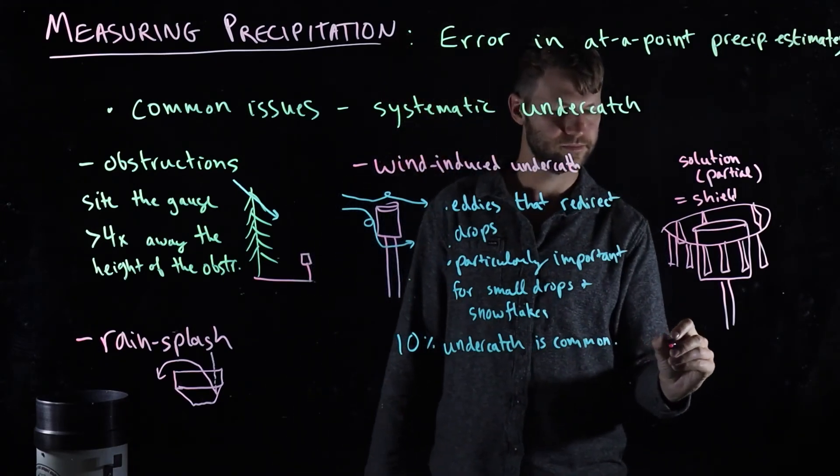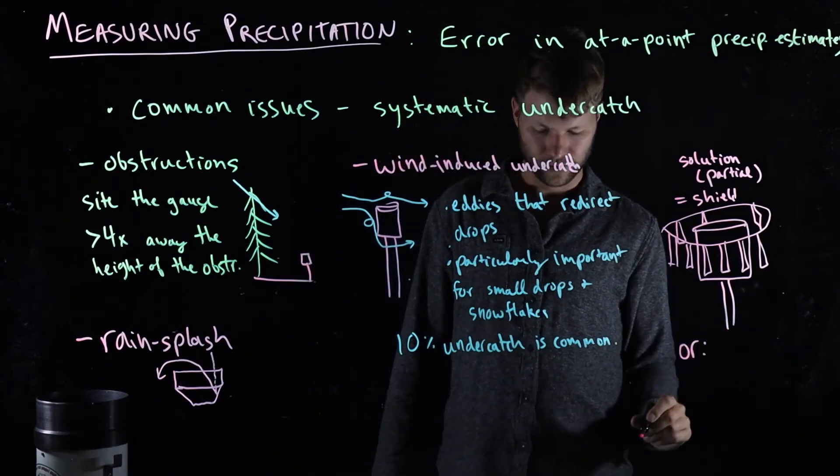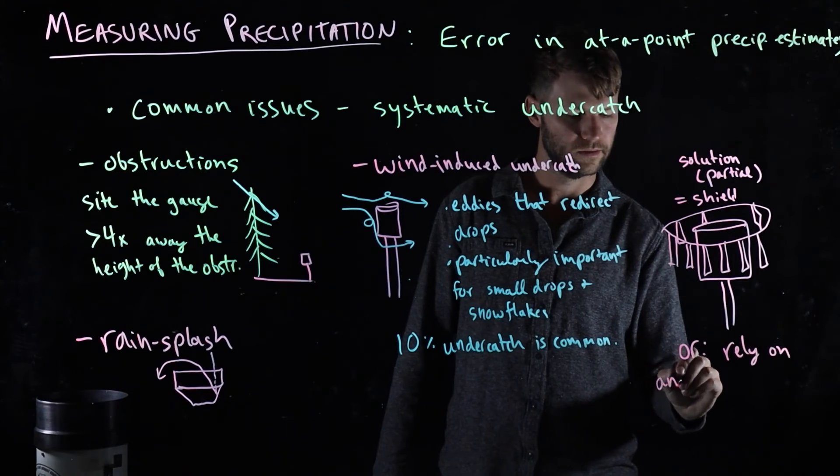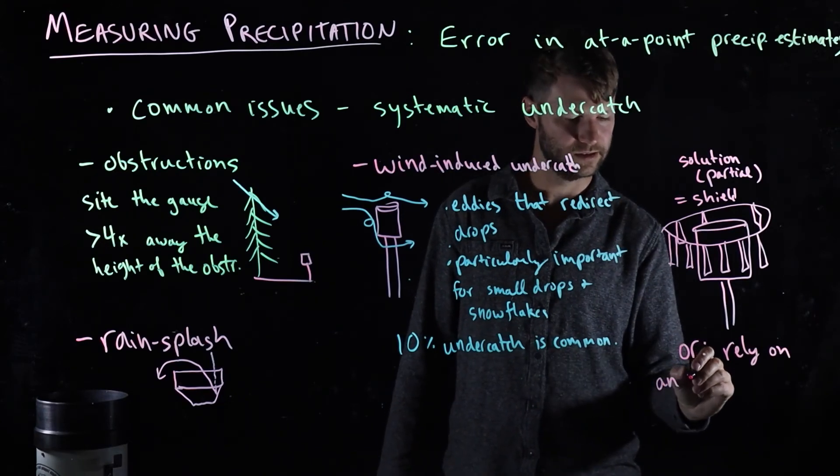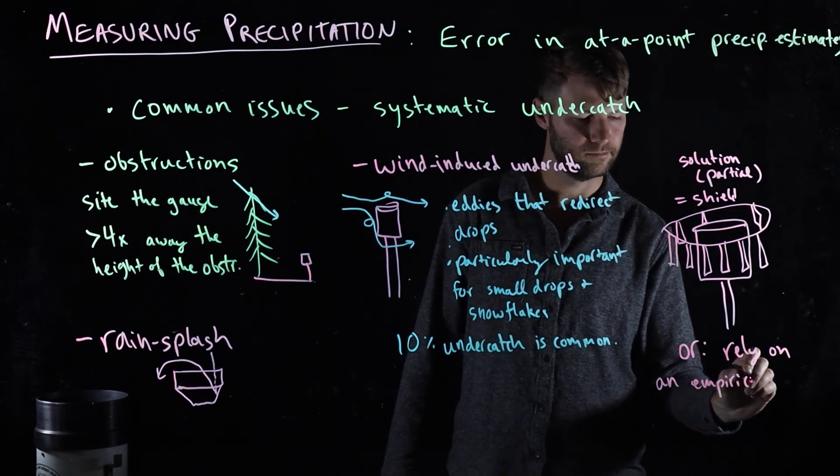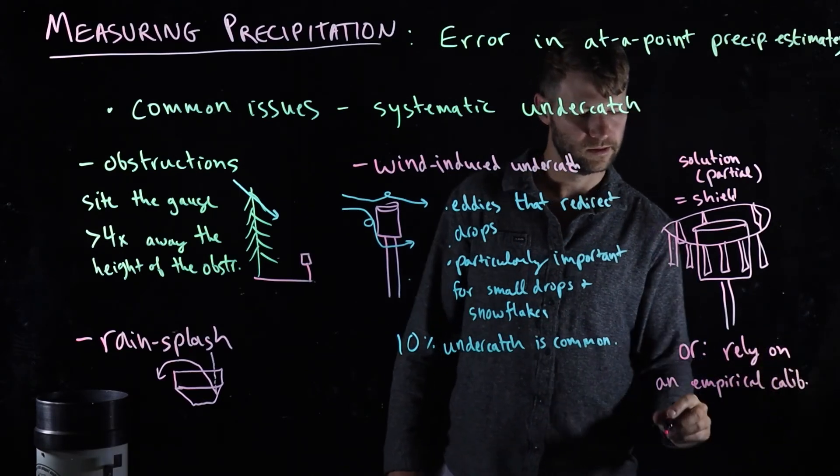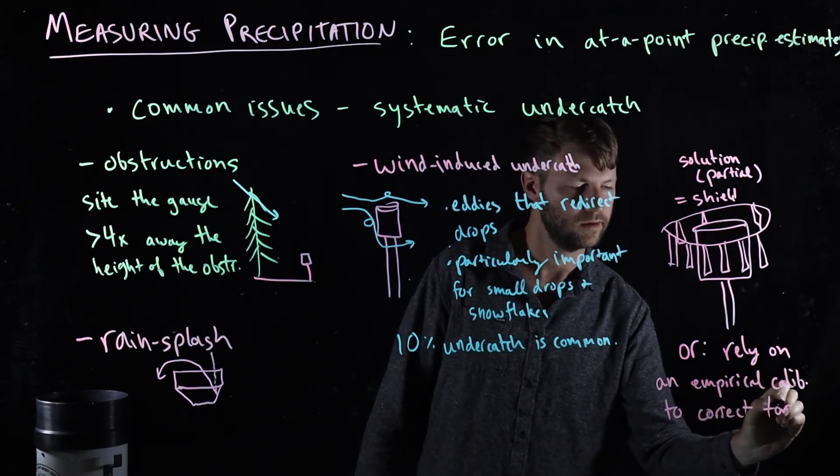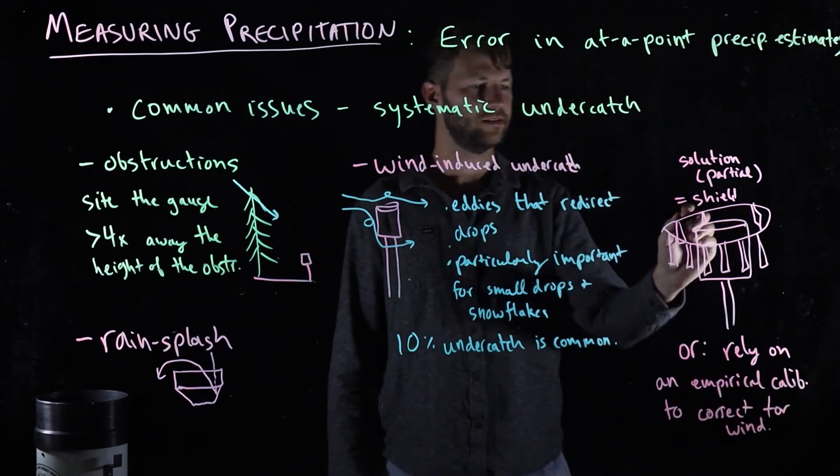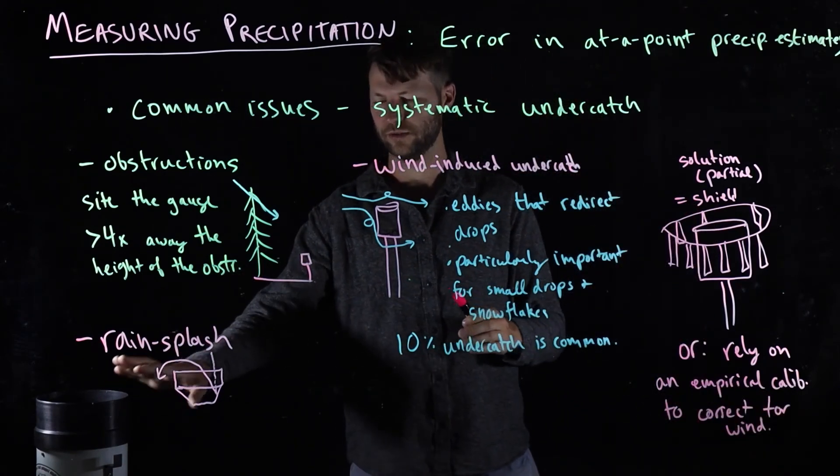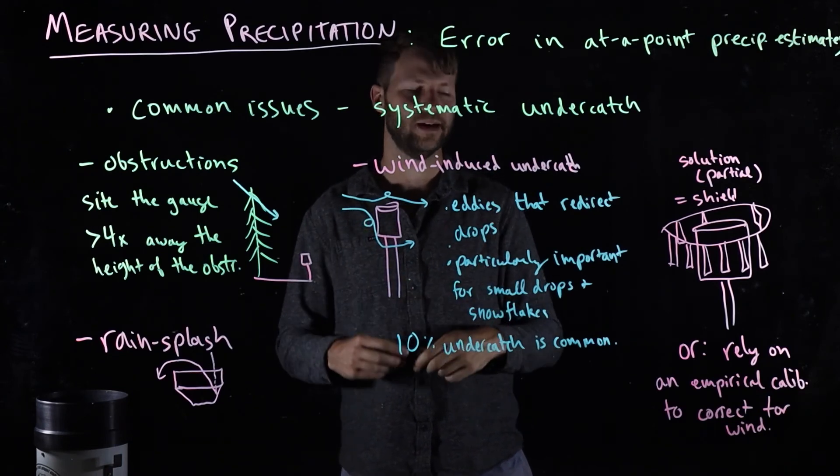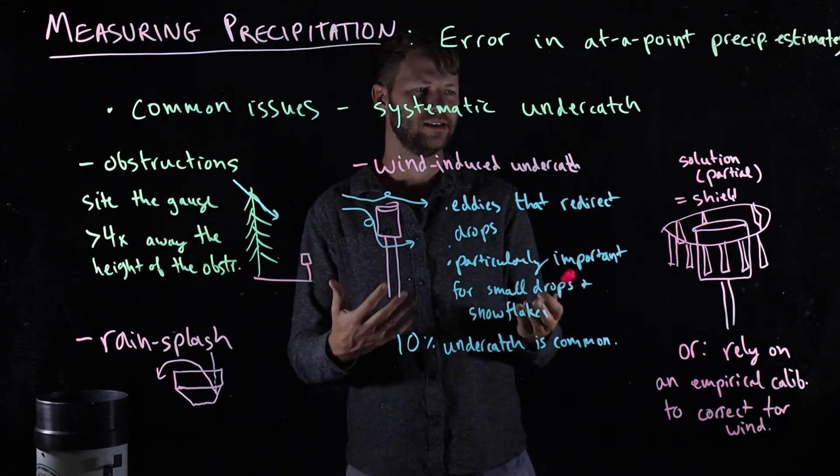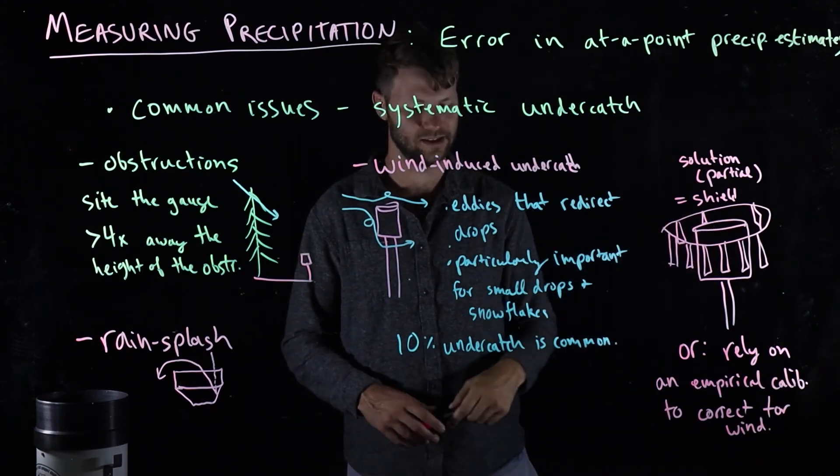Alternatively, you can rely on an empirical calibration to correct for wind-induced undercatch. And these calibrations usually work in places where you have next to the rain gauge a wind gauge that's measuring the amount of wind and its speed. And if it's raining during a time when it's very windy, you add some of that rain back in with this empirical correction.